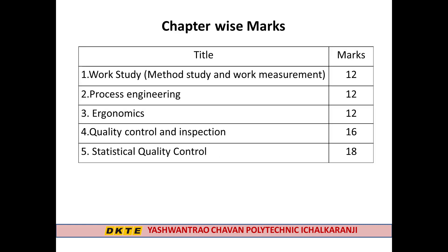The Industrial Engineering and Quality Control subject contains a total of 5 chapters. First is Work Study, Method Study and Work Measurement, having 12 marks. Process Engineering has 12 marks, Ergonomics has 12 marks, Quality Control and Inspection has 16 marks, and the last chapter, Statistical Quality Control, has 18 marks.